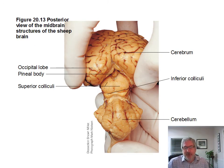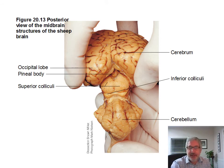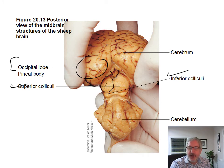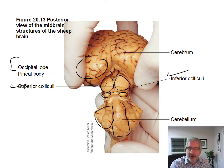Here's a posterior view of the midbrain structures of the sheep brain. We have the occipital lobe at the back, and there's the pineal gland or pineal body. Then we have the superior and inferior colliculi — here's a superior colliculus here, and here, and inferior colliculus here and here. Those are little bumps. And here's your cerebellum, with the vermis in the middle and the cerebellar hemispheres — left and right.